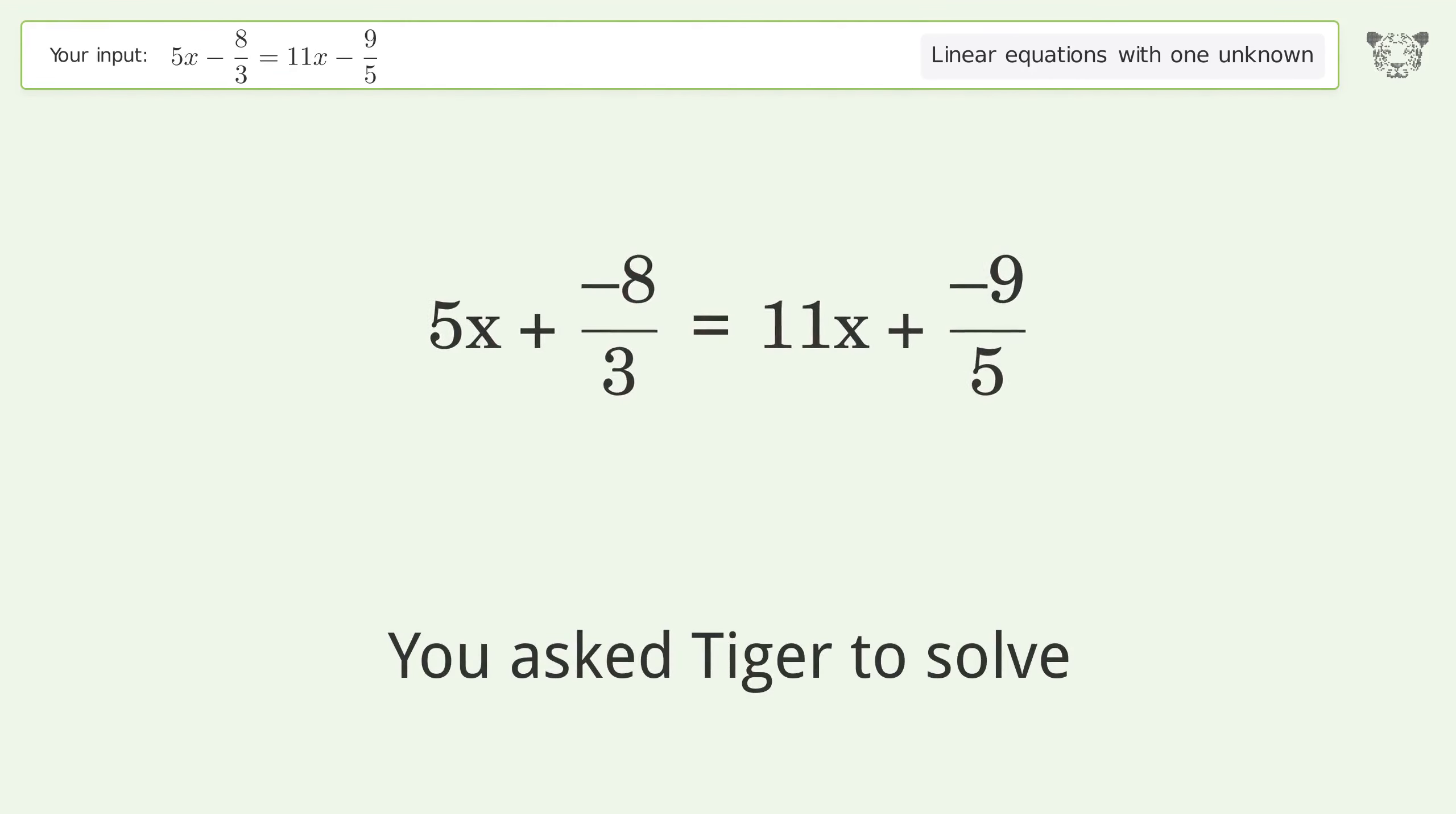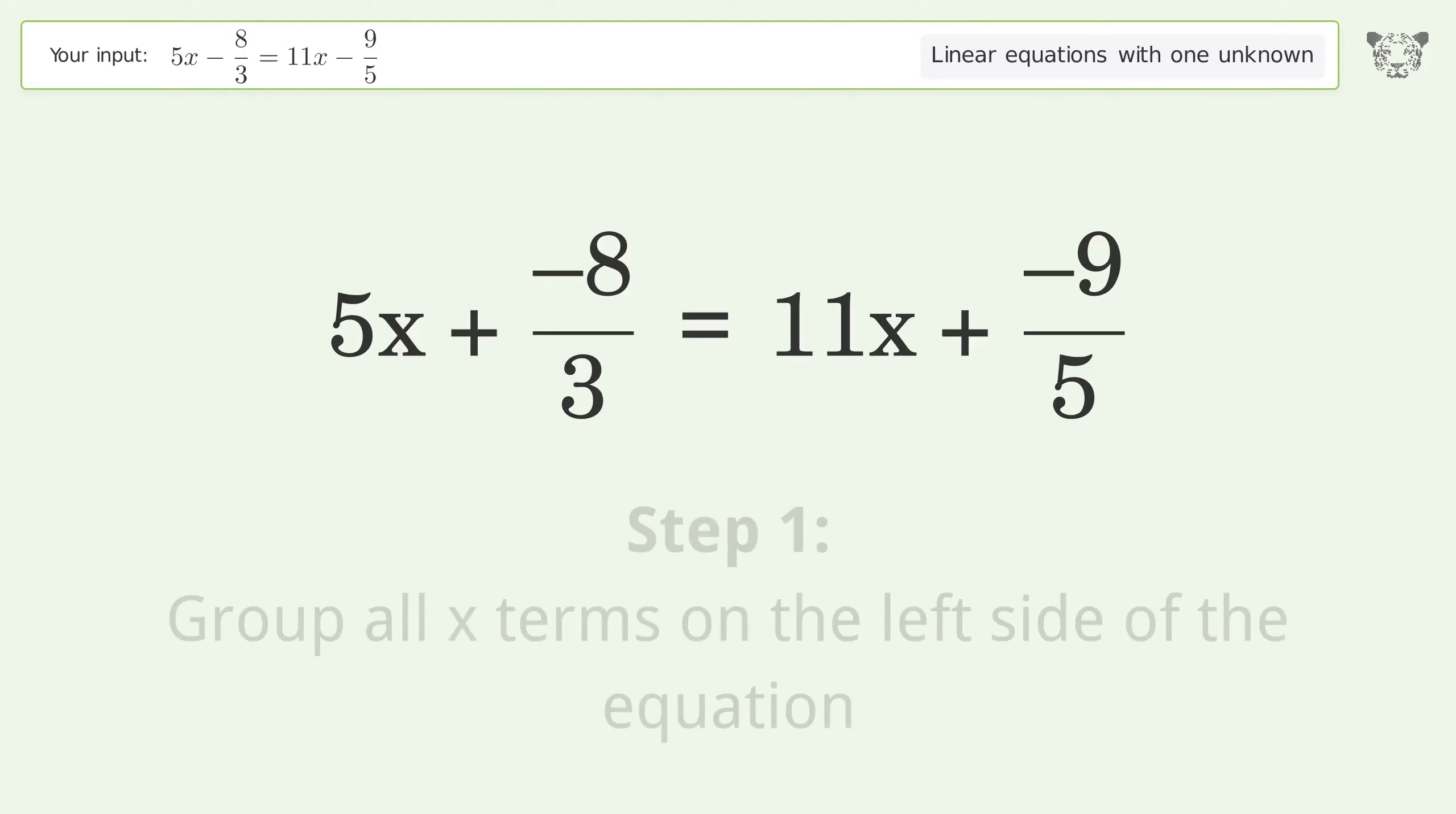You asked Tiger to solve this equation dealing with linear equations with one unknown. The final result is x equals negative 13 over 90. Let's solve it step by step. Group all x terms on the left side of the equation.